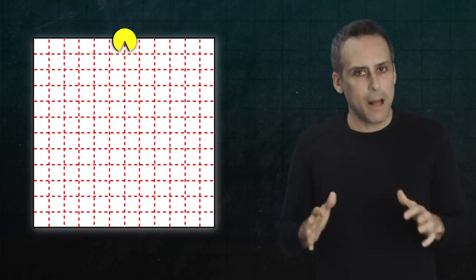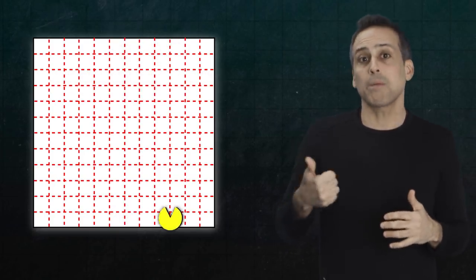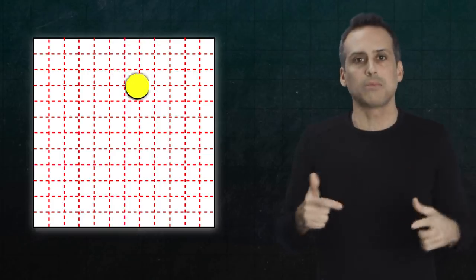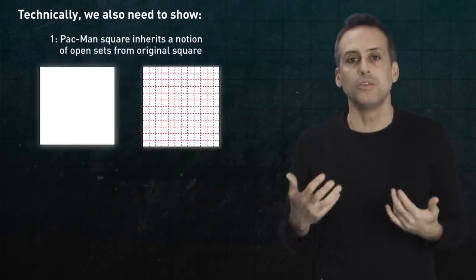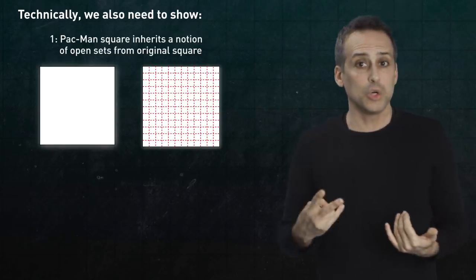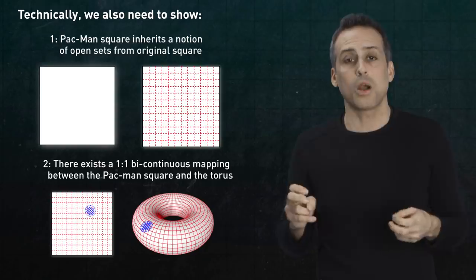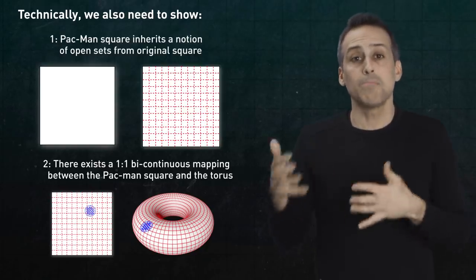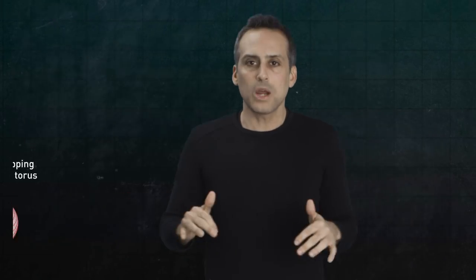Technically, to formally establish this correspondence, I'd still need to show two things. One, that the Pac-Man square equipped with its new concept of identical points inherits a notion of open sets, or neighborhoods, from the original square. And two, that there exists a one-to-one mapping between the Pac-Manified square and an actual torus that maps neighbors in one space to neighbors in the other space. Demonstrating all that rigorously would take us too far off track today, but both facts turn out to be true.